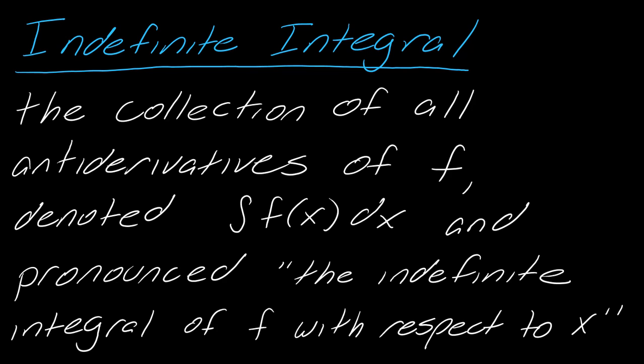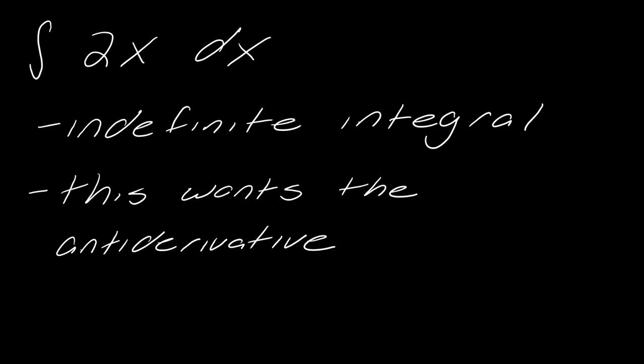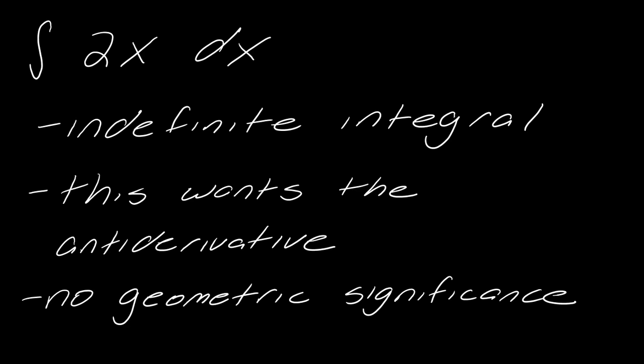Just a quick overview — you've got your integral sign, this part here is called the integrand, and then the x in dx is your variable of integration. From that definition, all we want is the antiderivative. There's really no geometric significance to this; it's really just about the antiderivatives, and the antiderivatives are just a bunch of formulas.